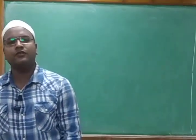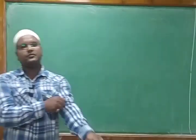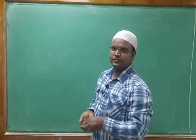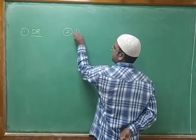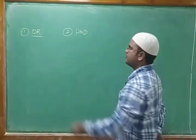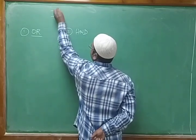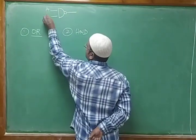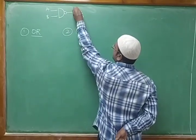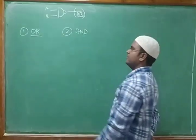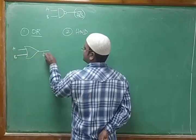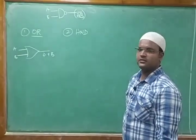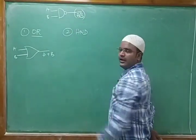Our next topic is universal gates. The universal gates are NAND and NOR. We need to write the equivalent functions for basic gates in terms of universal gates. For example, how do we write OR in terms of NAND? The NAND gate function is: given inputs A and B, the output is (AB)̅.